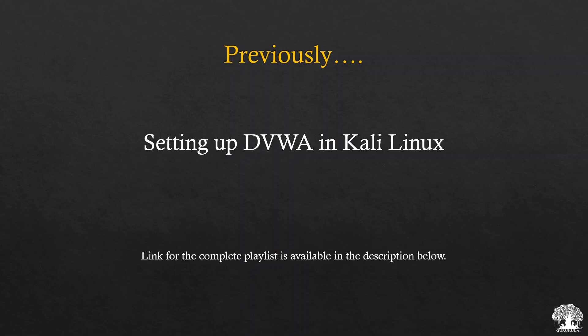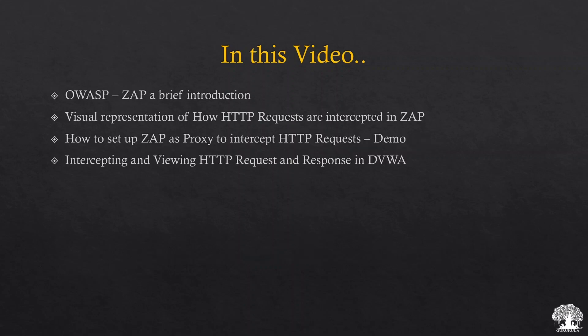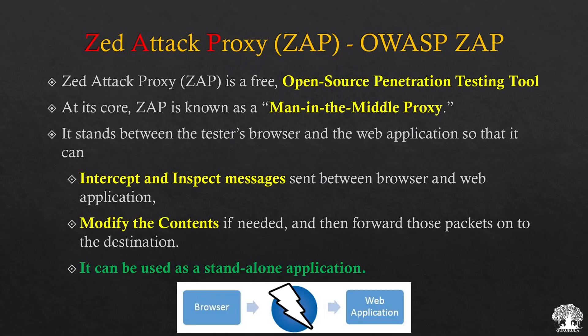I'll leave the link to the complete playlist in the description box. This is an overview of this particular video: first we will discuss what OWASP ZAP is all about, then we will see the visual representation of how HTTP requests are intercepted in the ZAP application, how to set up ZAP as a proxy in a walkthrough session, and finally we will intercept and view HTTP requests exchanged between the DVWA web application and the client.